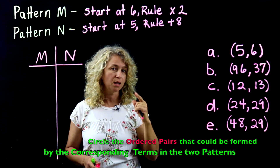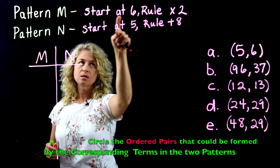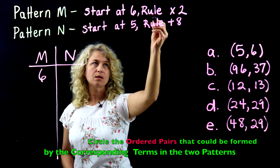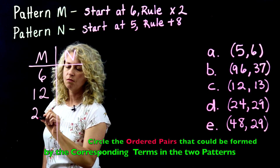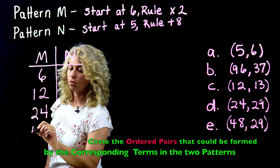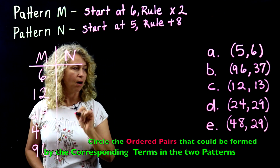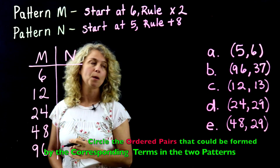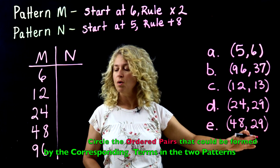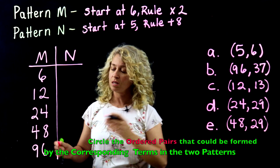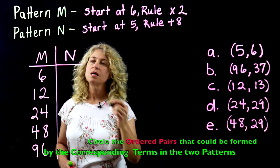Students sometimes try to do this in their head — it doesn't work out well. You have to write the patterns out. Pattern M starts at 6, rule is times 2: 6, 12, 24, 48, 96. I stop at 96 because none of the answer choices have numbers larger than that.